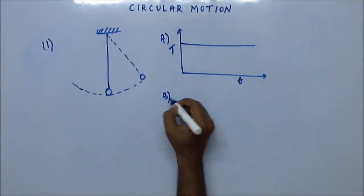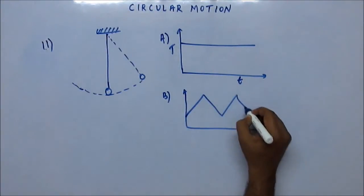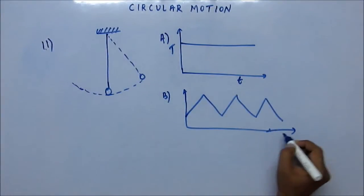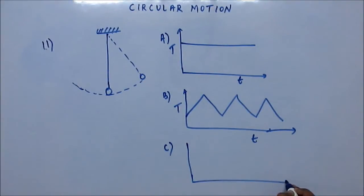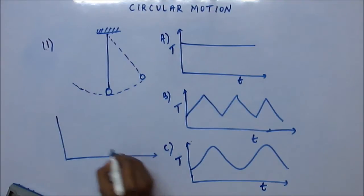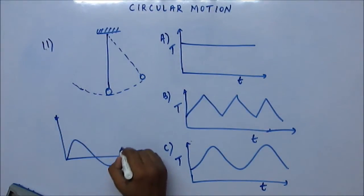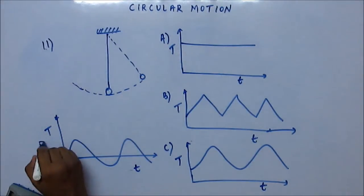The first option: tension is constant with respect to time. The second option: tension increases and decreases linearly with time. C option: it increases, decreases, increases, but the value doesn't become zero at any point of time. And option D: it goes up and down, tension becomes positive, negative, and also becomes zero like this. So you tell me which one is the correct option.